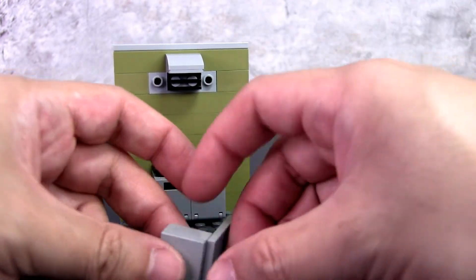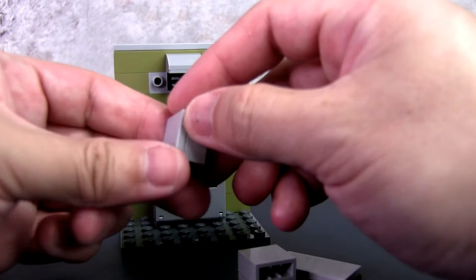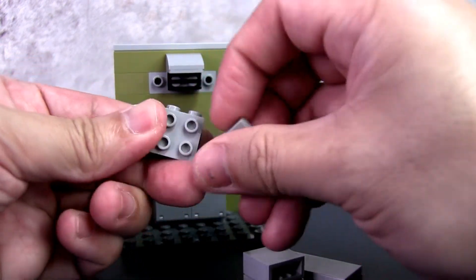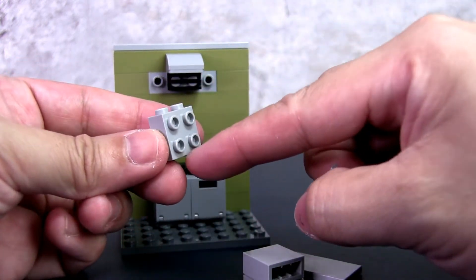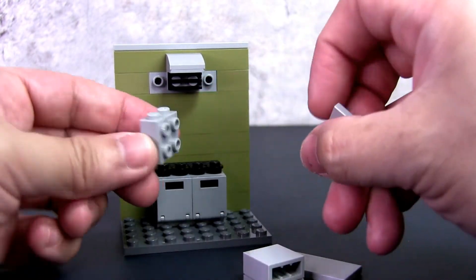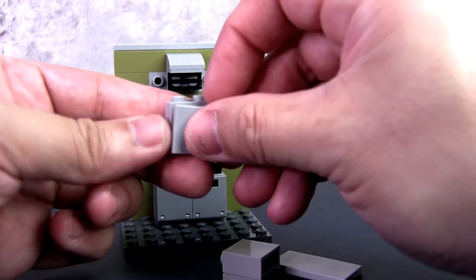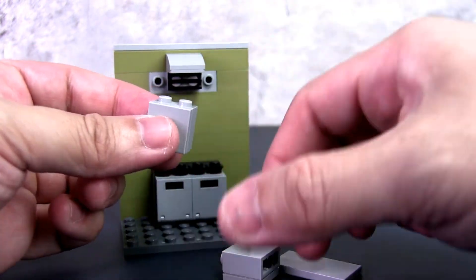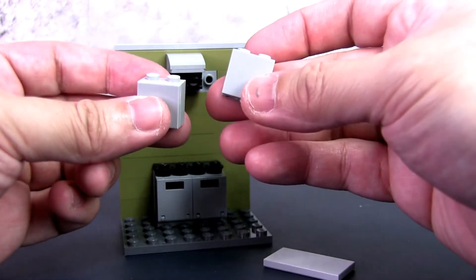For the sides of the hood, very straightforward. You need two of these two by two modified bricks with studs on the side. So it's similar to this one, but in a square format. And you need a two by two tile to cover it to make it nice and smooth. And you just need two of these.